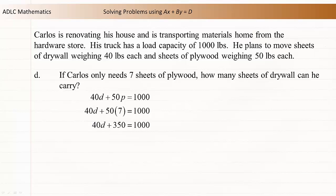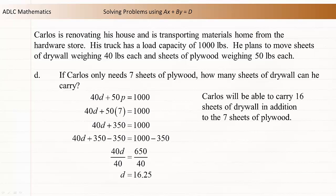Now, subtract 350 from both sides of the equation to isolate the term that includes d. Now we have 40d equals 650. Divide both sides of the equation by 40 to isolate d. d is equal to 16.25. Carlos will be able to carry 16 sheets of drywall in addition to the 7 sheets of plywood.